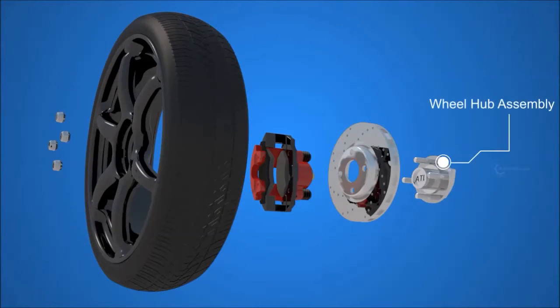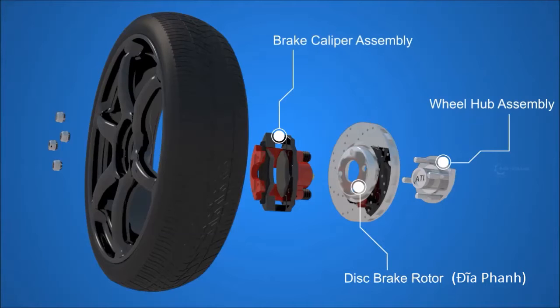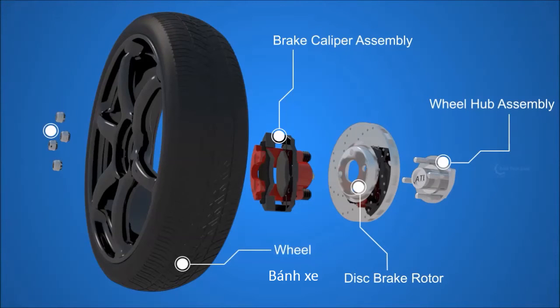The parts include: the wheel hub assembly, the disc brake rotor, the brake caliper assembly, the wheel, and the lug nuts.